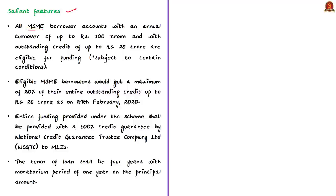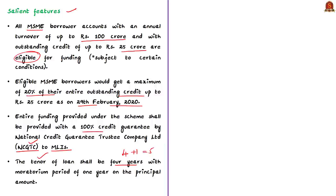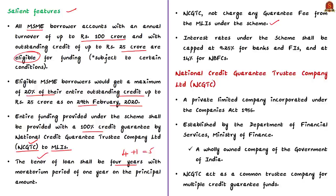The main objective of the ECLGS is to provide an incentive to member lending institutions (MLIs) — including banks, financial institutions, and non-banking financial companies — to increase access to additional funding for MSME borrowers. All MSME borrower accounts with annual turnover up to Rs. 100 crore and outstanding credit up to Rs. 25 crore are eligible. Eligible borrowers get a maximum of 20% of their outstanding credit as on 29th February 2020. The entire funding carries a 100% credit guarantee by NCGTC to member lending institutions.